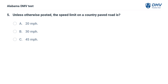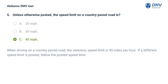Unless otherwise posted, the speed limit on a country paved road is 45 miles per hour. If a different speed limit is posted, follow the posted speed limit.